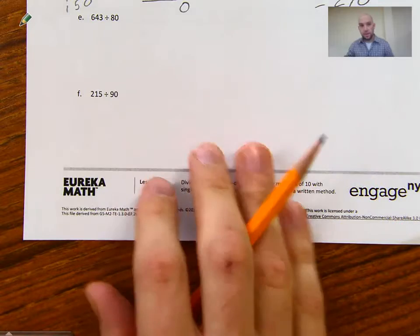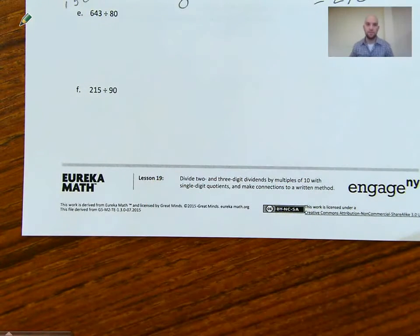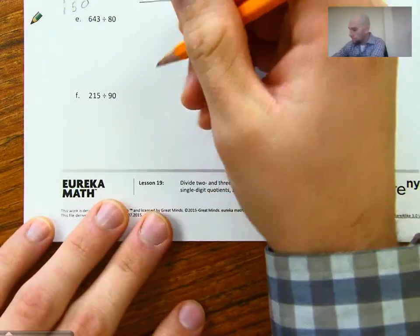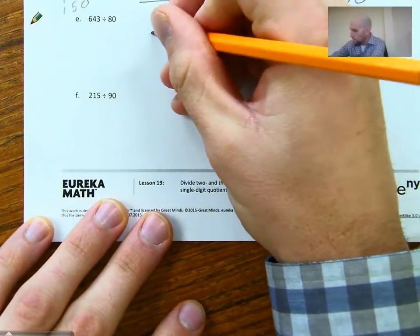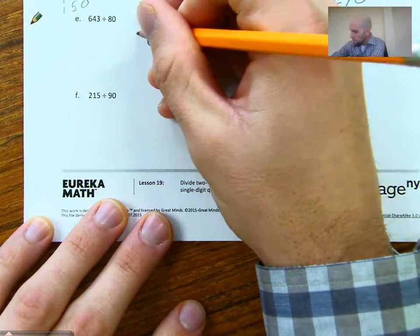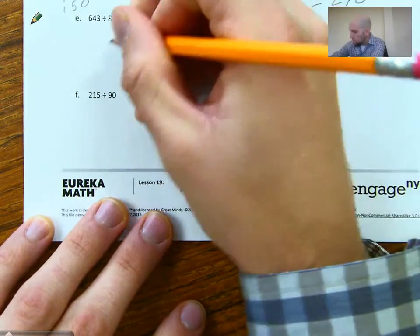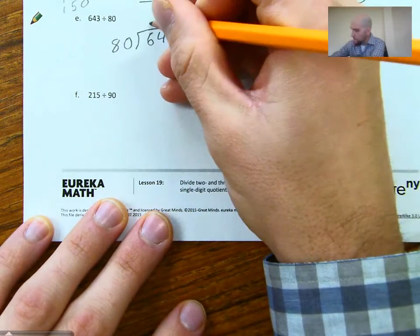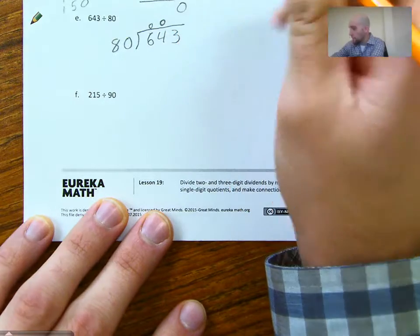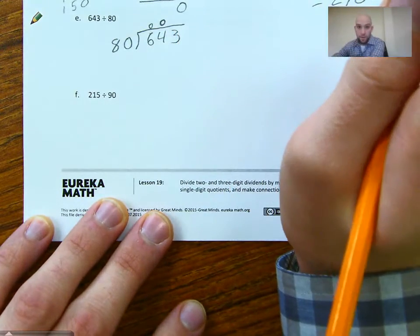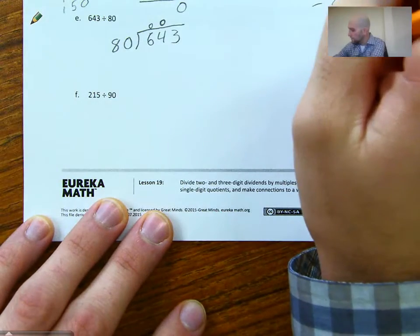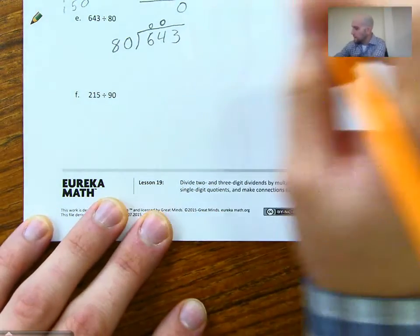Letter E, we have 643 divided by 80. So we have 643 divided by 80. 80 does not go into 6. It does not go into 64. But it will go into 643.